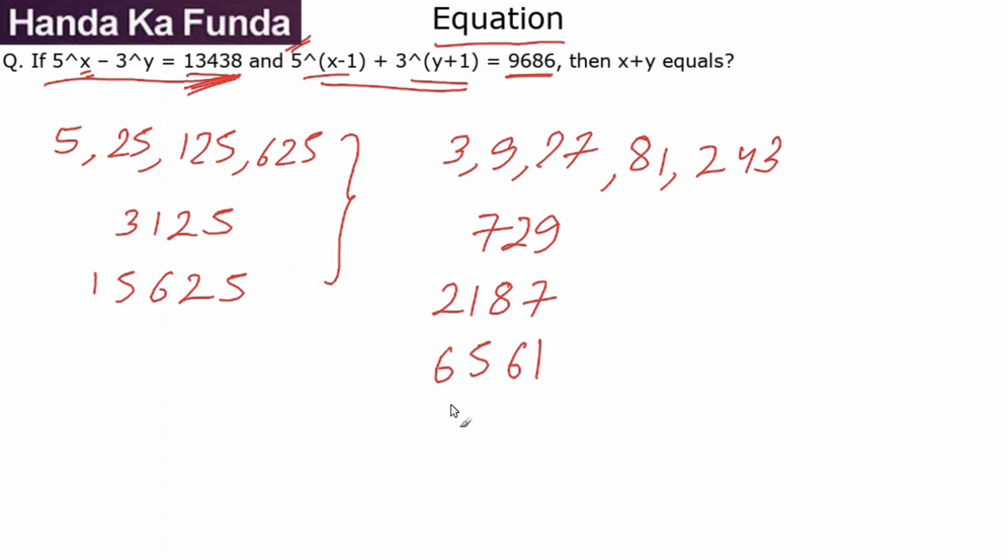3000 odd and 6000 odd—how much do these two add up to? Well, if you do the addition, you will realize that they indeed add up to 9686. That is enough for solving the question. But if you went some other way, you could have realized that 15000 something minus 2000 something—if you do the subtraction, you will get the first equation, which is 13438.